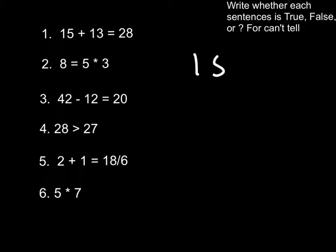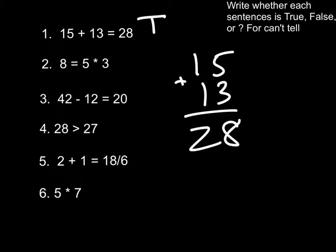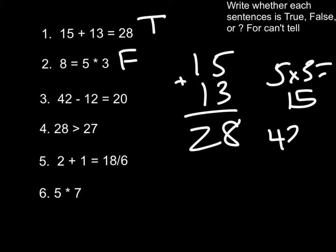Number 1, 15 plus 13 is 28. This is true. 5 times 3 equals 15, not 8. So that is false. 42 minus 12 is 20. This is true.